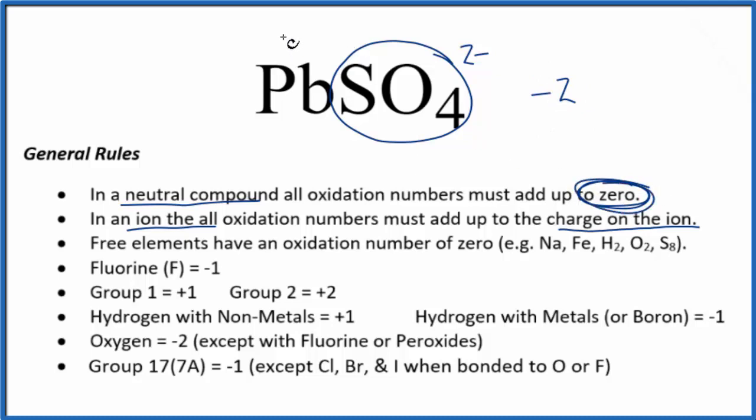For everything to add up to zero, this has to be plus two. So we have minus two plus two, which adds up to zero because we have a neutral compound in PbSO4.